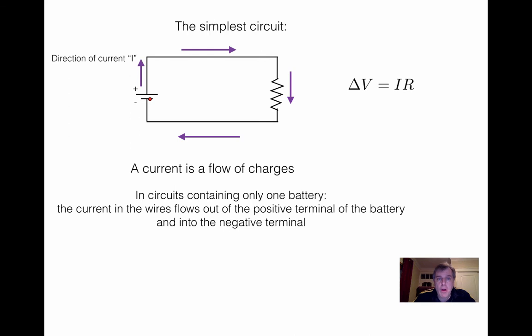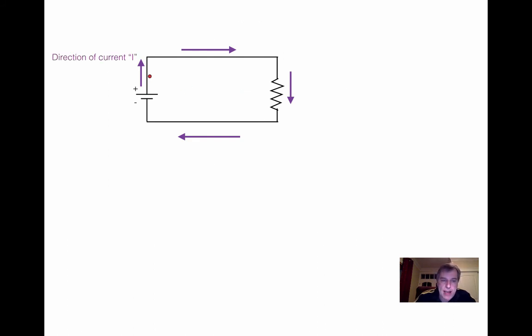Soon, we'll do more complicated circuits where there will be, for example, several batteries or there will be other things like capacitors and inductors. In those cases, it can happen sometimes that in certain batteries, the current will flow into the positive terminal. But for now, if you have only one battery and just a bunch of resistors, you're safe with the fact that the current will always flow out of the positive terminal.